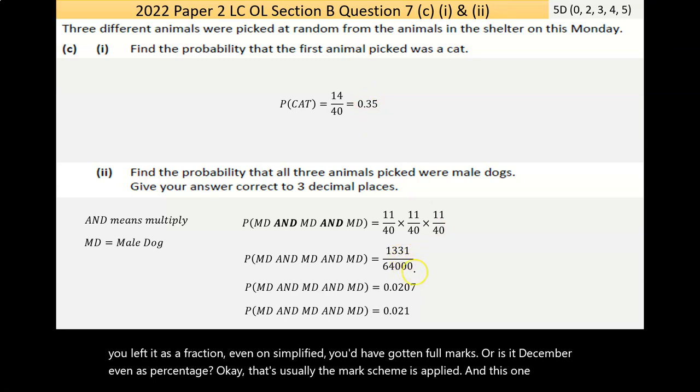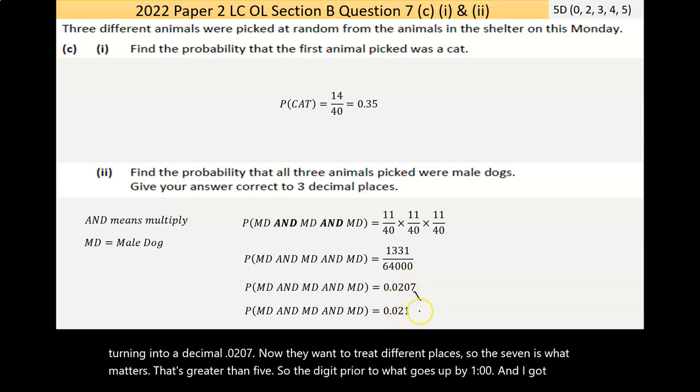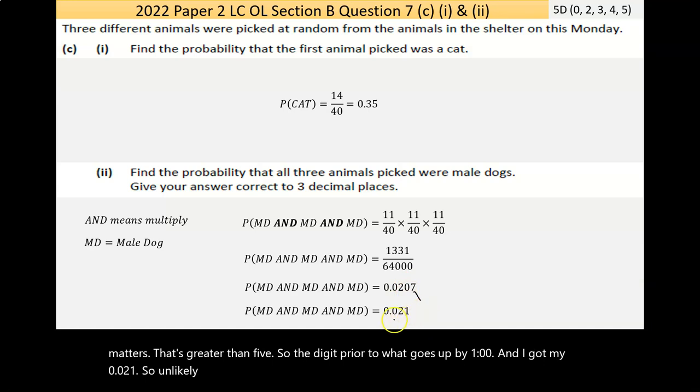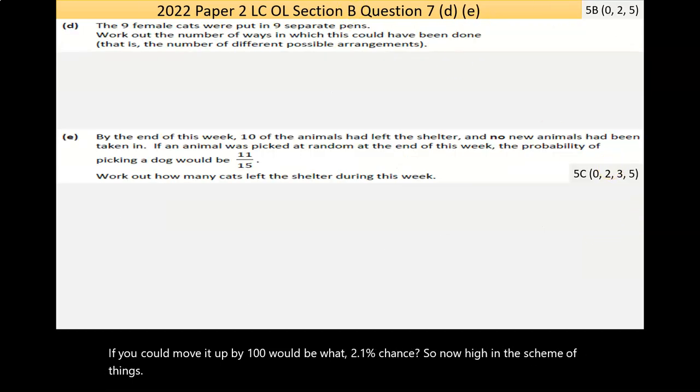And this one here, I'm turning it to a decimal, 0.0207. Now, they went to three decimal places. So the 7 is what matters. That's greater than 5. So the digit prior to it goes up by 1. And I got my 0.021. So unlikely, in a sense. If you could multiply that by 100, it would be 2.1% chance. So not high in the scheme of things.